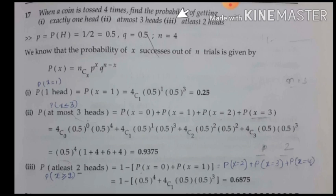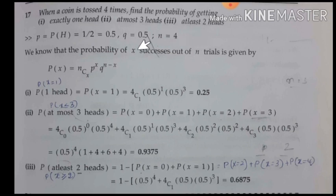First we need to define what X is. X is the number of successes out of N trials. Here, getting a head is the success. They have given four trials, so N equals four.